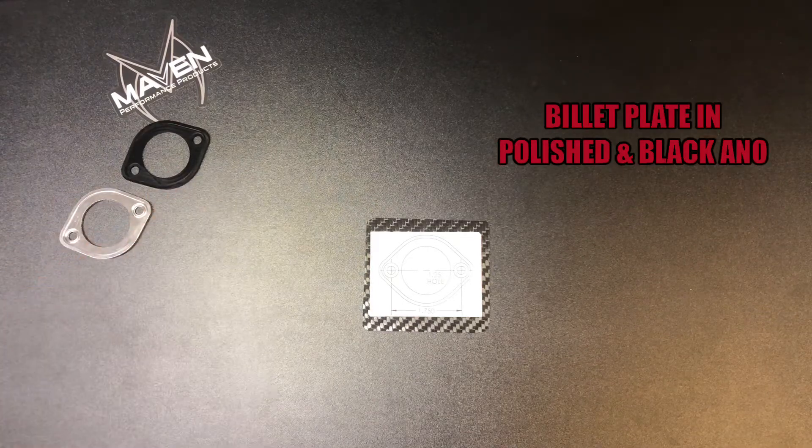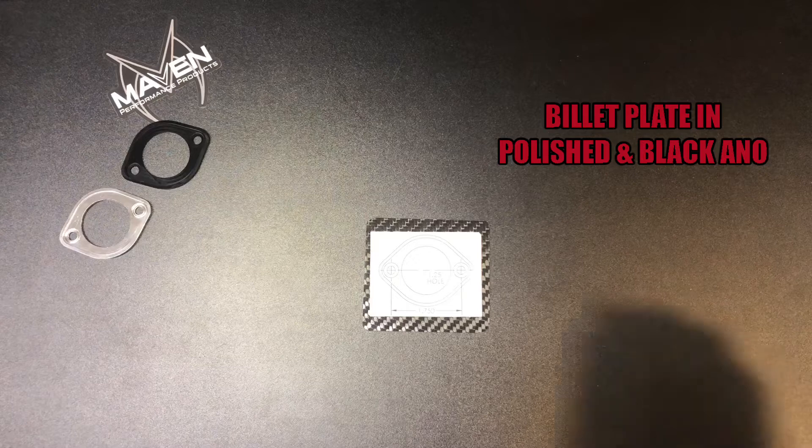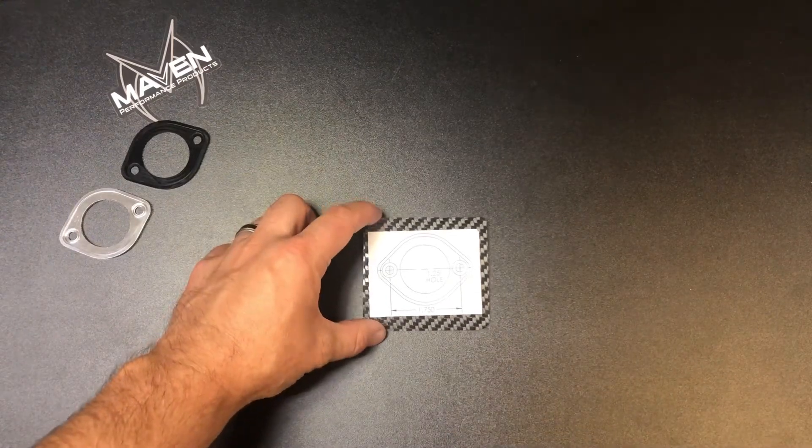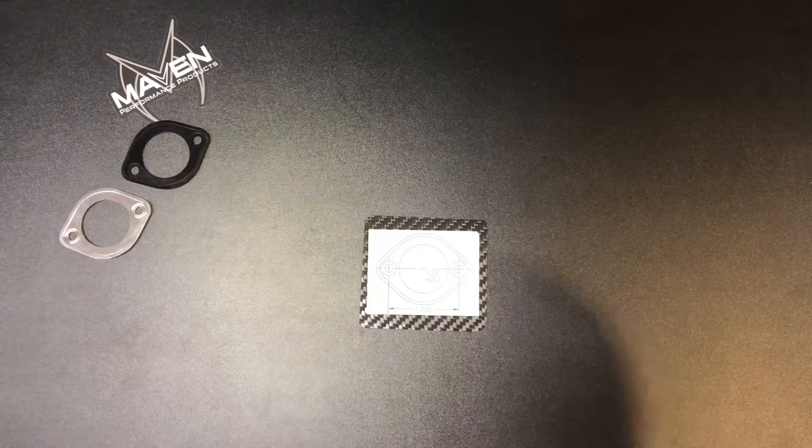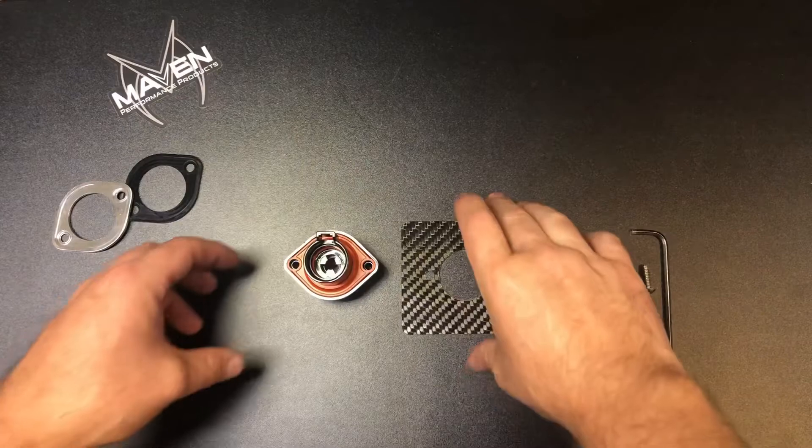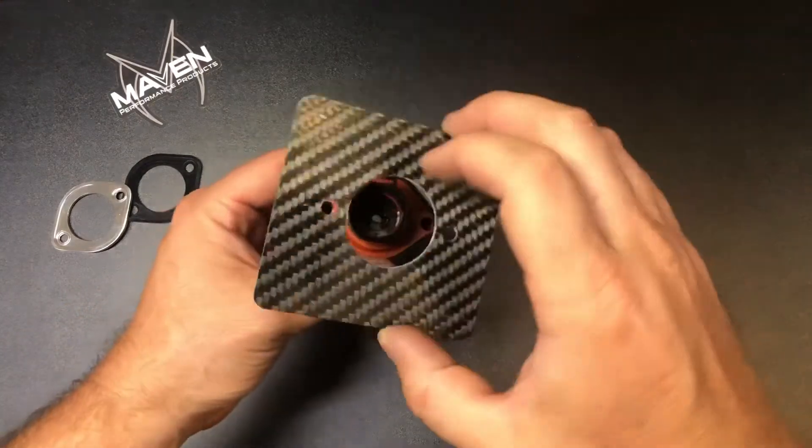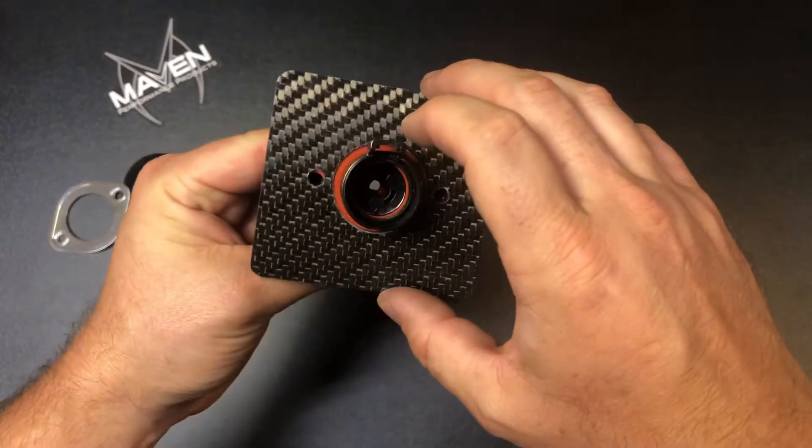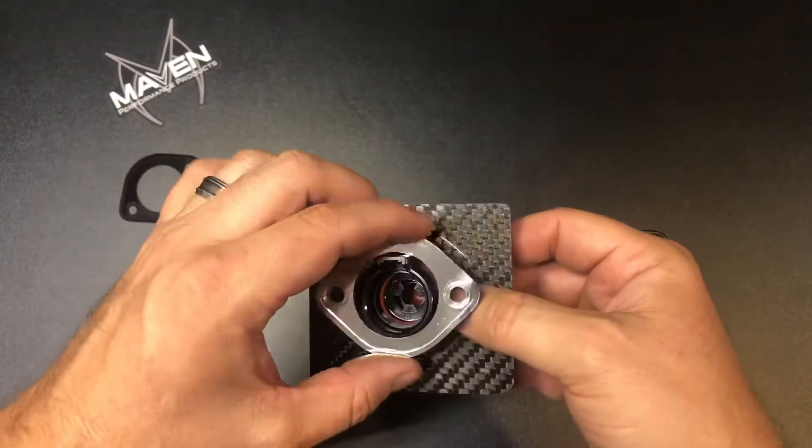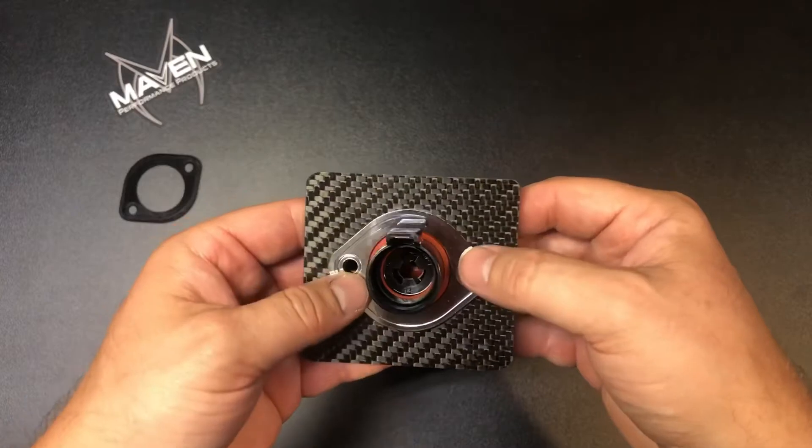It comes in black anodized or polished—either option is available. We'll go ahead and drill this out. We're using this piece of carbon fiber to represent the firewall. The hole is cut, so we'll just put this into the firewall, line up your holes, and bolt it in.